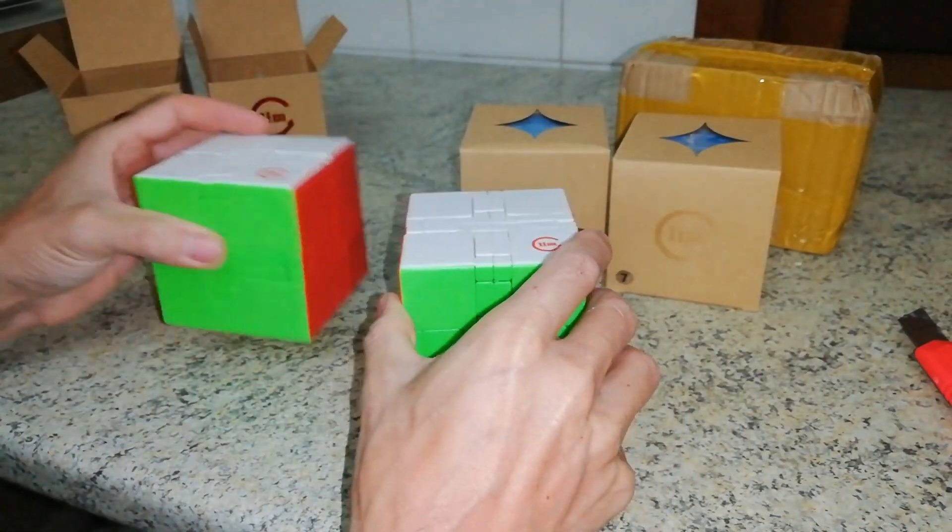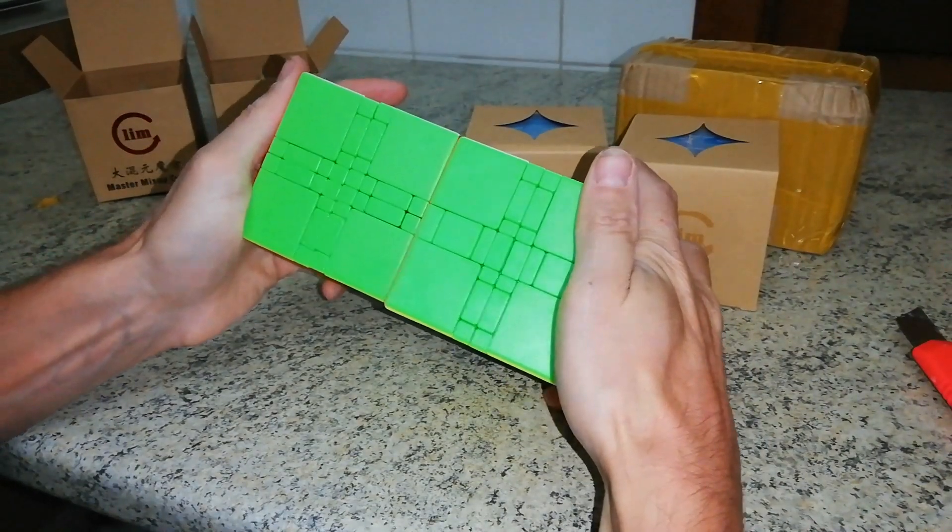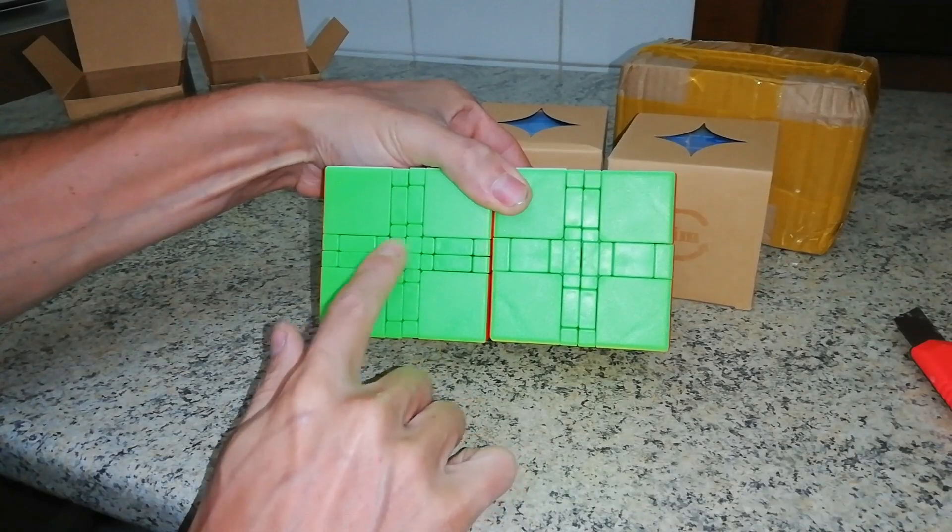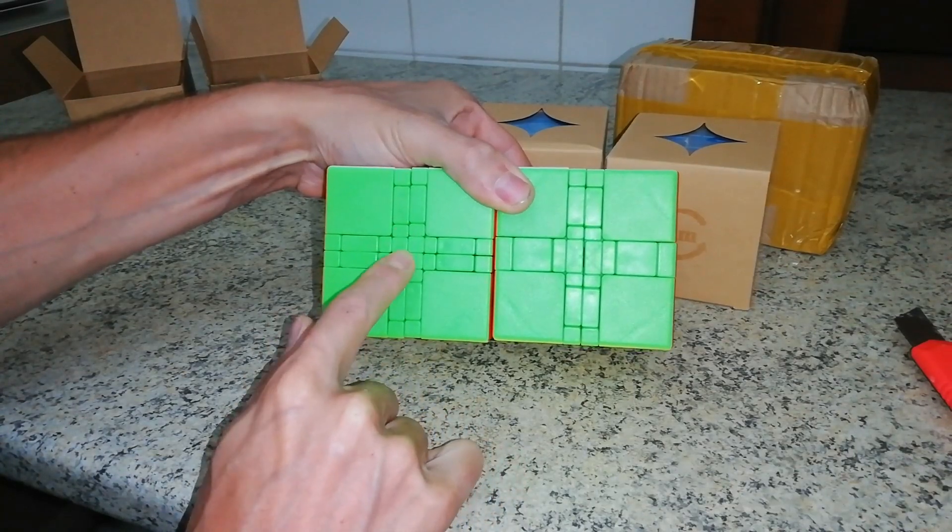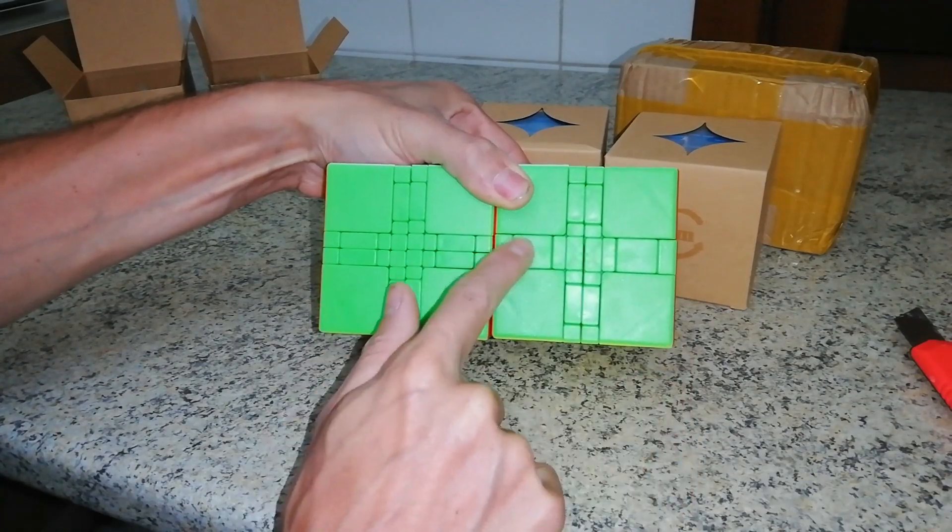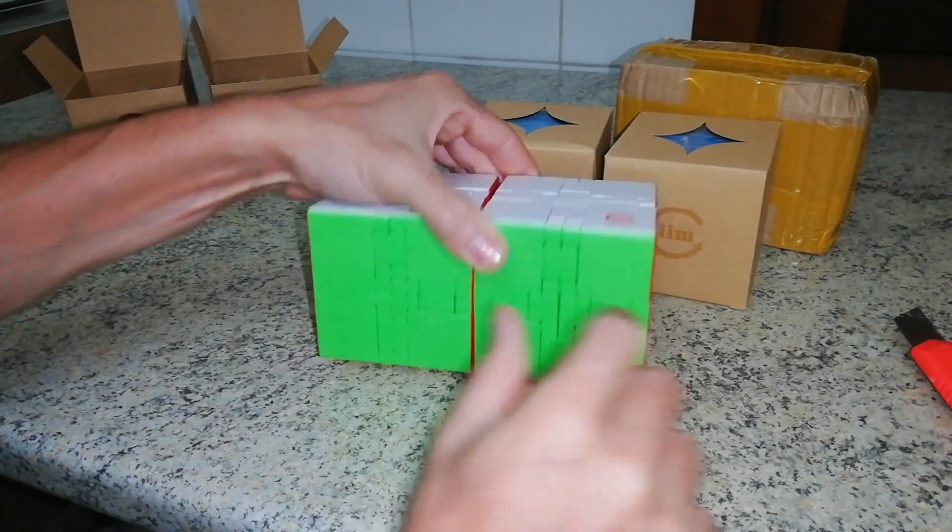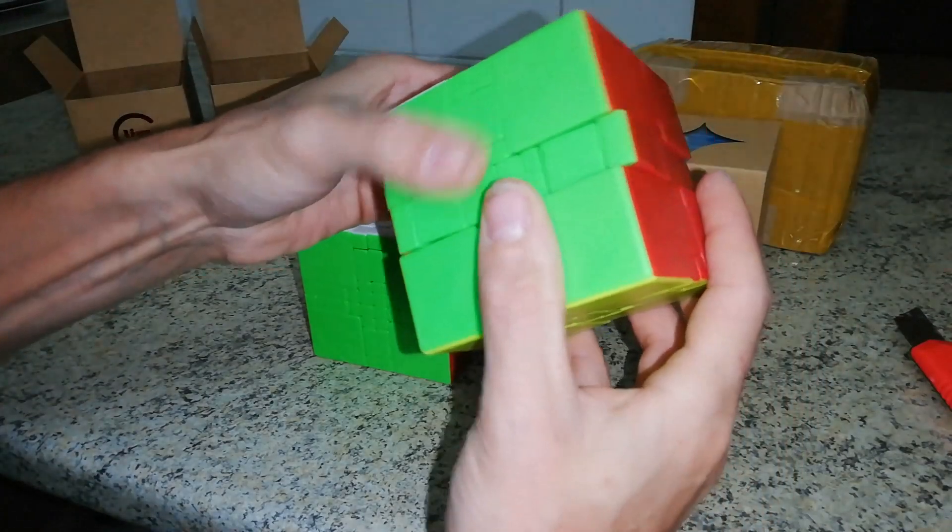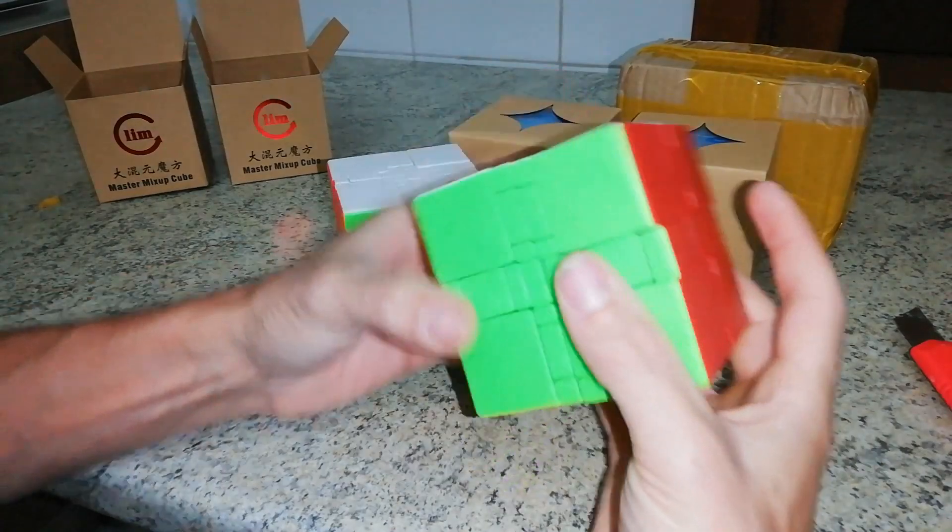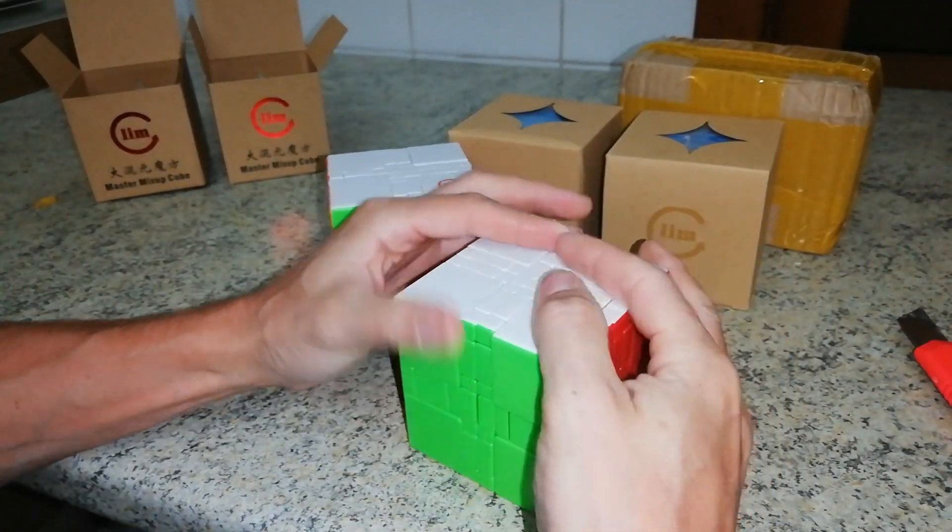Then we have this one that looks like this one. But in this layer, as you can see, the pieces are different. Because here we have four pieces that will compose a center while here we have these two. And this part that is an entire block that here we have with a split part. So this puzzle can rotate with this layer with three layers, while in this layer with four layers. So it's a 3x3x4.